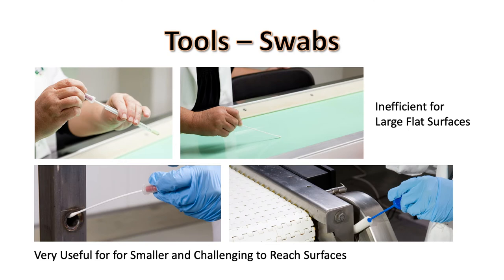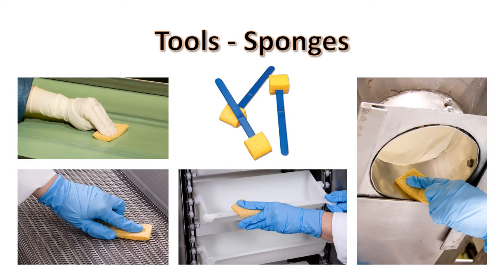There are several tools available for environmental monitoring. The classic swab looks much like a cotton swab that you might have at home. Small cylindrical sponges are also available. Swabs usually come prepackaged in sterile buffer with a cap that allows you to easily remove and replace the swab without touching it. Swabs are very useful for smaller and challenging-to-reach spots, but they aren't ideal for larger, flat surfaces. There are a variety of sponges available that are much better suited to large, easier-to-access surfaces. Sometimes these sponges are attached to a disposable applicator.